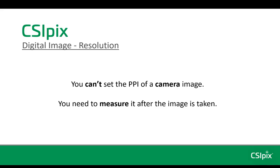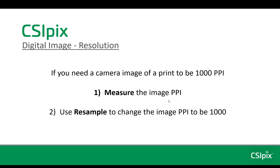You can't set the PPI of a camera image — you need to measure it after the image is taken. If you need a camera image of a print to be 1000 PPI, step one is to measure the actual image PPI, and step two is to use Resample to change the image PPI to 1000. Resampling will actually change the number of pixels in an image, using some interpolation technique to either increase or reduce the number of pixels.